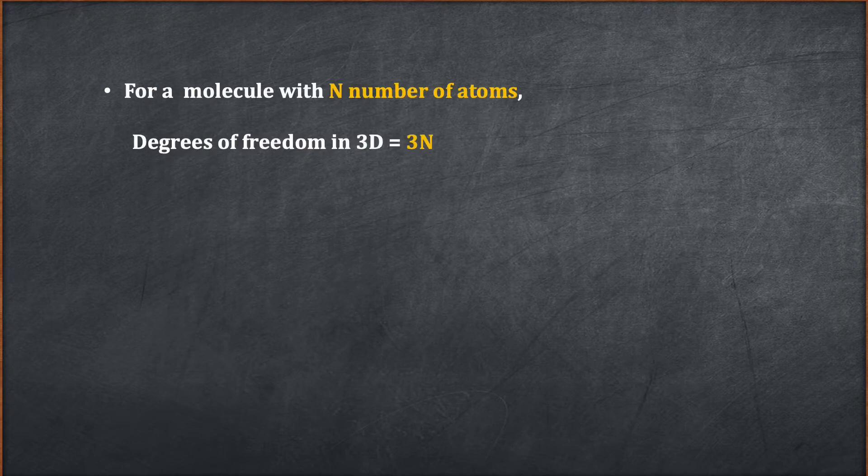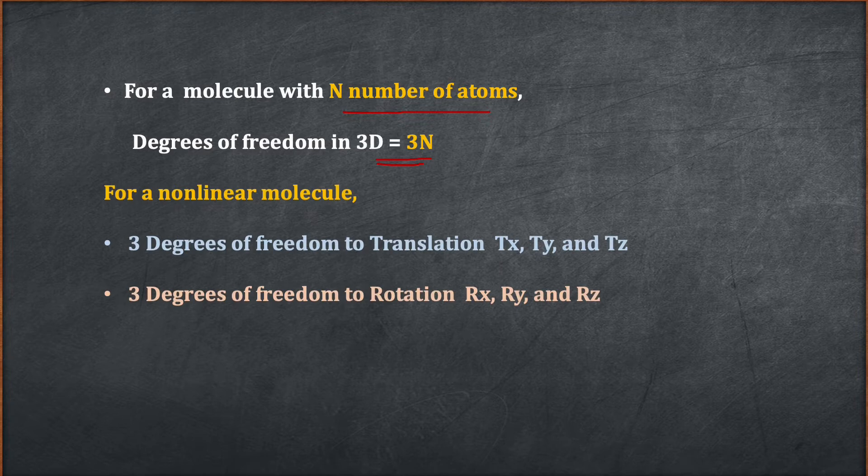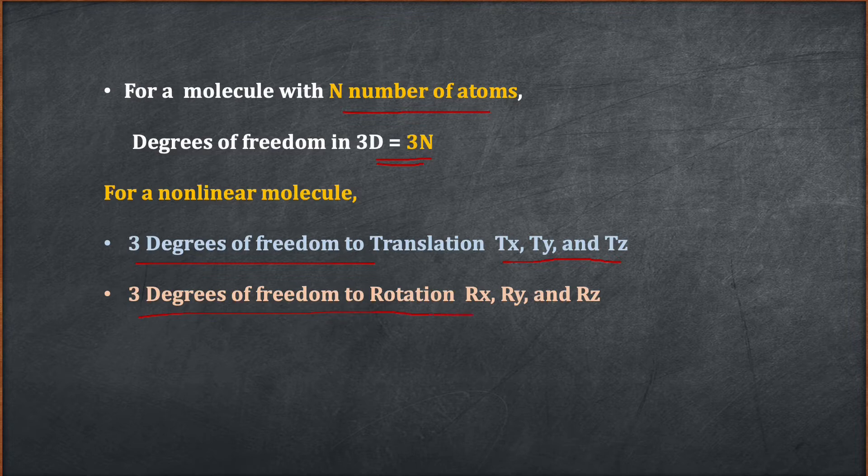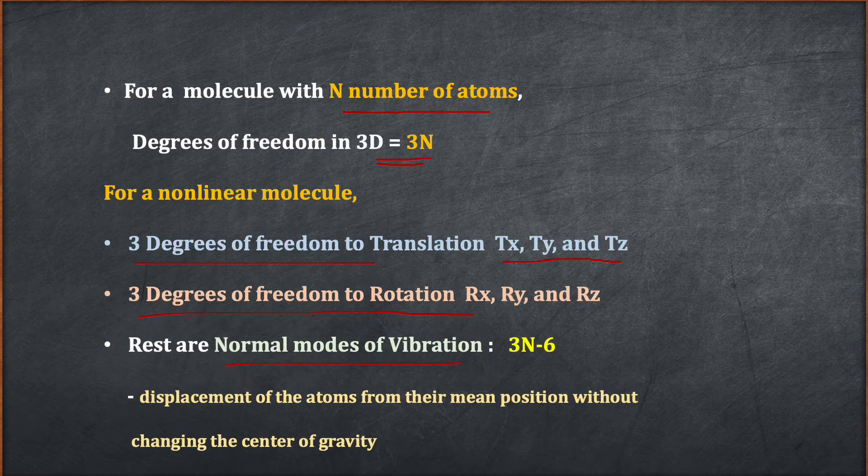For a molecule with N number of atoms, total degrees of freedom in 3D will be equal to 3N. And for a nonlinear molecule, three degrees of freedom is dedicated to translational motion (Tx, Ty, and Tz), another three degrees of freedom is for rotation motion (Rx, Ry, and Rz). Rest are normal modes of vibration, that will be 3N minus 6.